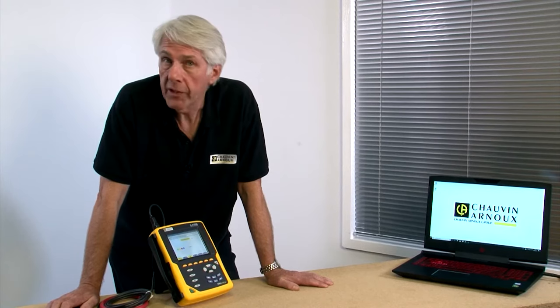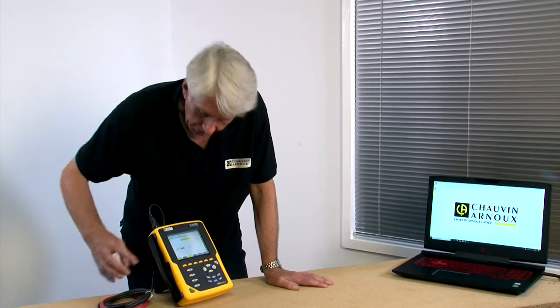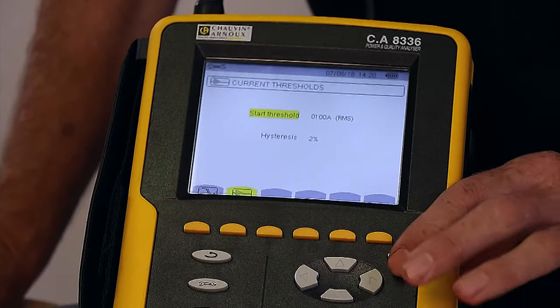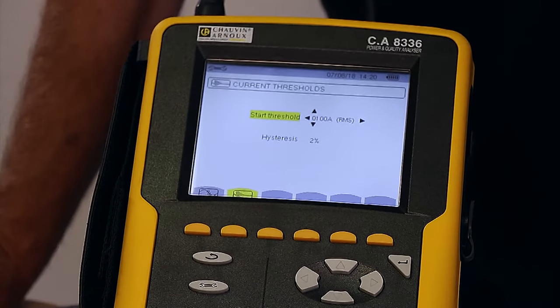Within capture mode, we can also set up the parameters for motor inrush current. So by pressing the fast button here for inrush, selecting enter, we can set a current limit above which inrush currents will be measured.